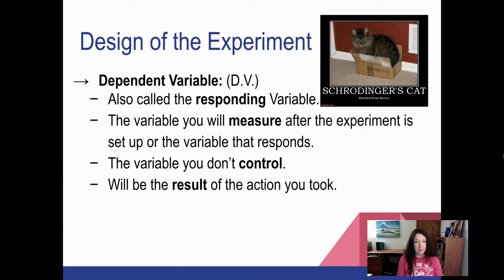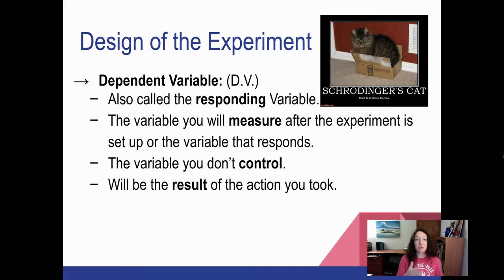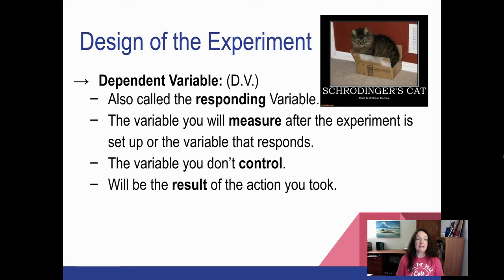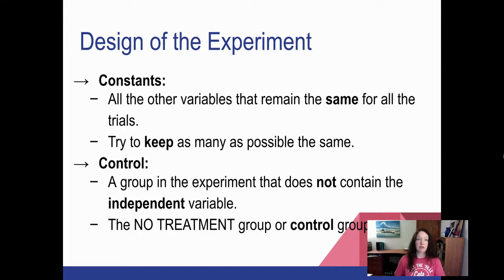The dependent variable is what you are measuring. It's also called the responding variable because it responds to the changing of the independent variable. You don't control this — it just happens depending on what is different in the independent variable setups. It's something that you're just measuring, seeing it for what it is. It's the result of, and the response to, the action that you took.